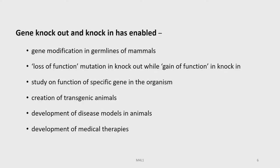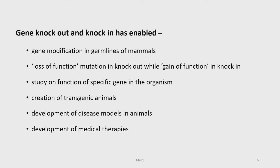These are very enabling technologies. Due to gene knockout and knockin, we can do genetic modification in germlines of mammals, achieve loss-of-function mutations in knockout and gain-of-function in knockin, study the function of specific genes in the organism, create transgenic animals, develop disease models in animals, and develop medical therapies. In this course, we will learn some of these applications in later lectures.